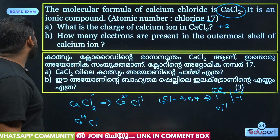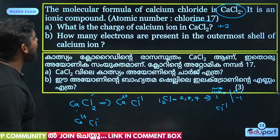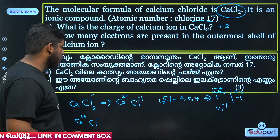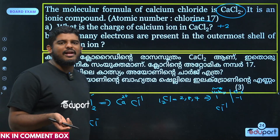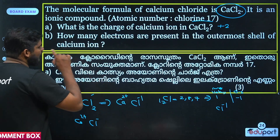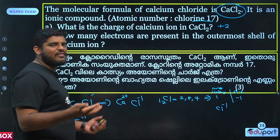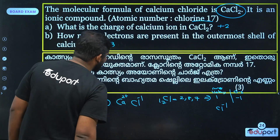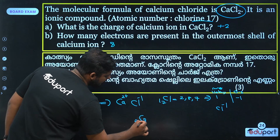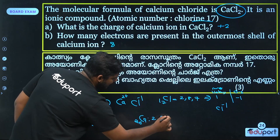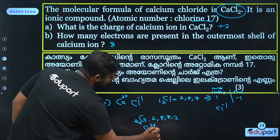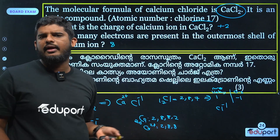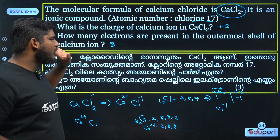How many electrons are present in the calcium ion? Calcium 2 plus means it has lost 2 electrons to become stable. The atomic number of calcium is 20, so its configuration is 2, 8, 8, 2. If calcium is 2 plus, it loses 2 electrons, giving the configuration 2, 8, 8 — that is 18 electrons.